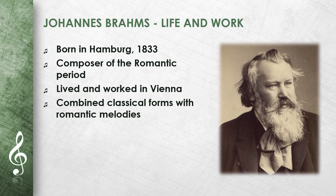Johannes Brahms was born in Hamburg in 1833. He was an important composer of the Romantic period and wrote symphonies, piano works, and chamber music. Brahms lived in Vienna for many years, where he worked as a conductor and pianist. His music combines classical forms with Romantic melodies. Johannes Brahms died in Vienna in 1897.